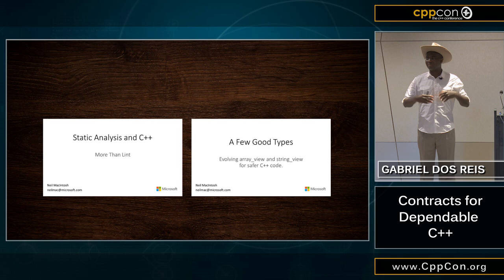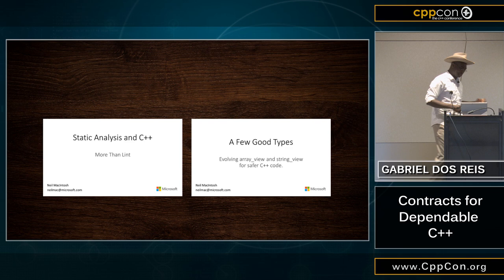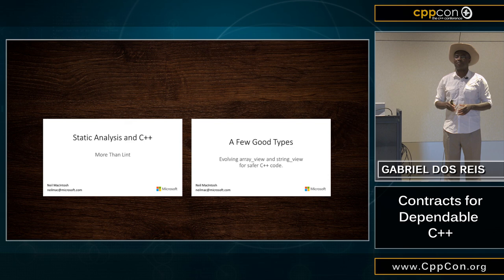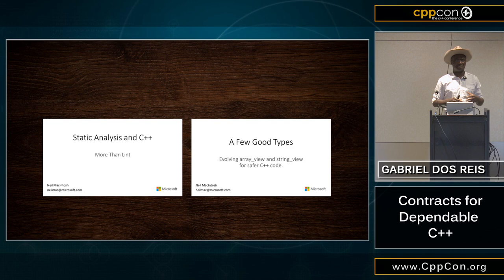I tend to call all these classes the safe buffer types. You have string view, array view, and you want to have safe access. What I call a dependable system is a system that may not be thoroughly correct. It may have some bugs, but when you run into the bugs, the behavior is somehow contained. If you click on the wrong link on a website, you should not have your hard drive reformatted.